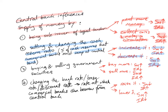The third method — and actually the most popular one used by central banks — is buying and selling government securities. If the central bank buys more government securities, it injects more money into the economy, so the supply of money increases and the interest rate decreases. If the central bank sells more securities, people pay the central bank money, so the supply of money decreases and interest rates rise.